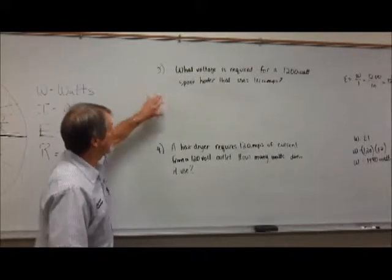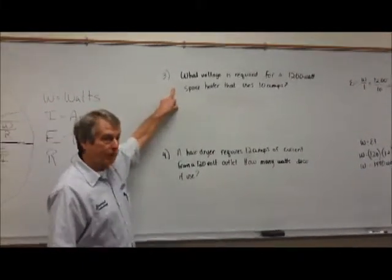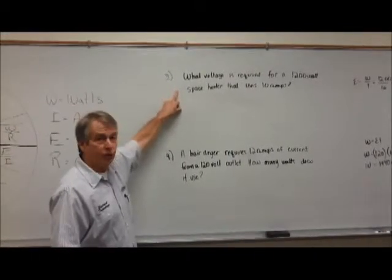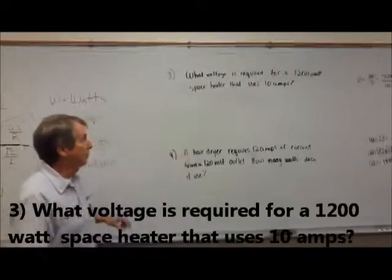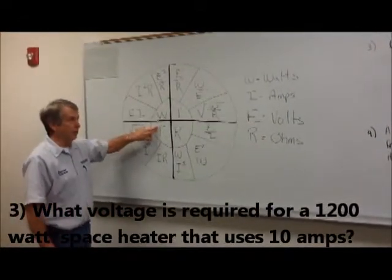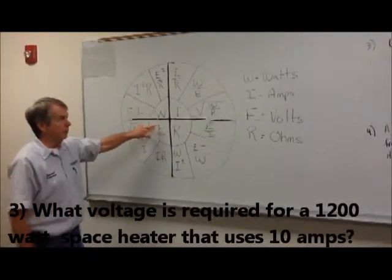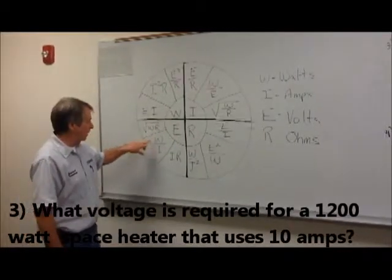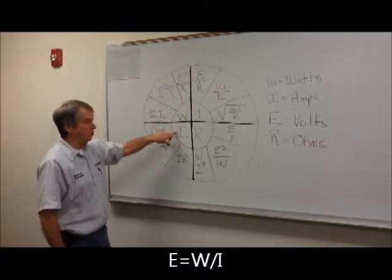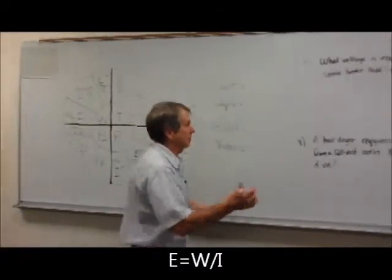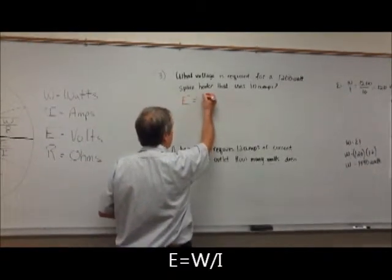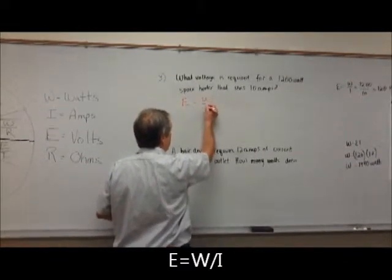The next problem we are going to solve is what voltage is required for a 1200 watt space heater that uses 10 amps. So we are looking for voltage — we are going to solve for E. We have the watts and we have the amps, so we are going to take watts divided by amps to get our volts. E is equal to W divided by I.